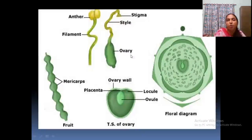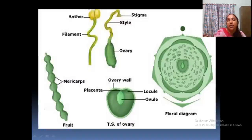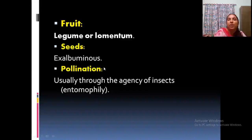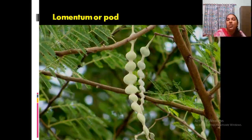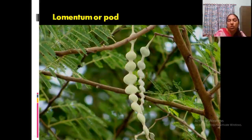The fruit is a pod or lomentum. Aestivation is valvate. In some cases petals are free, in some cases united. Fruit is a lomentum or legume. Pollination is usually by insects. The lomentum is a fruit with single-seeded small partitions present inside.